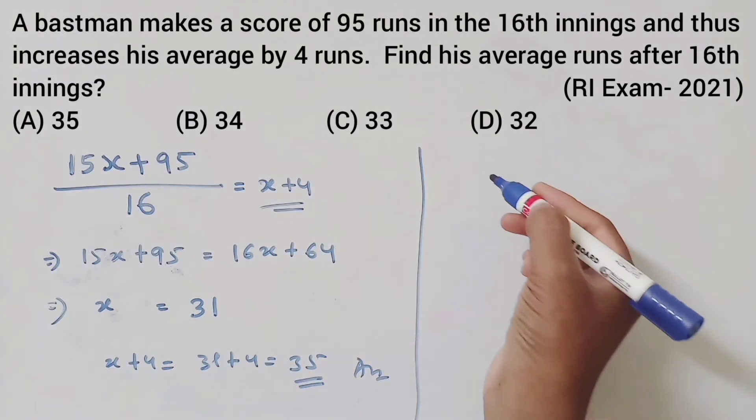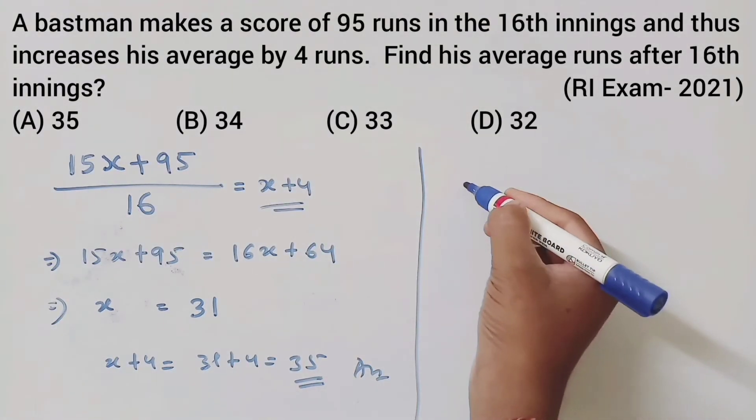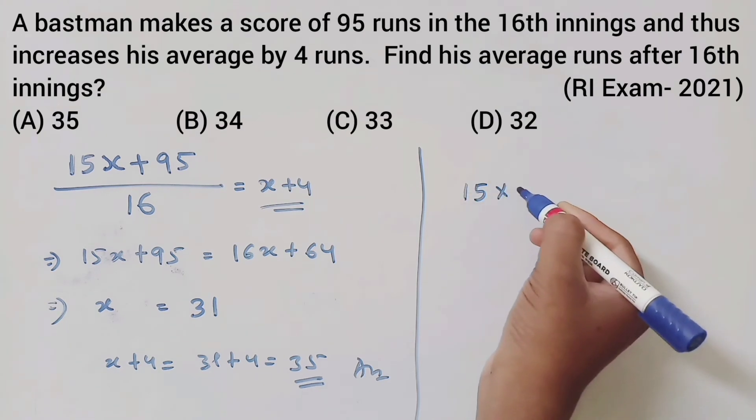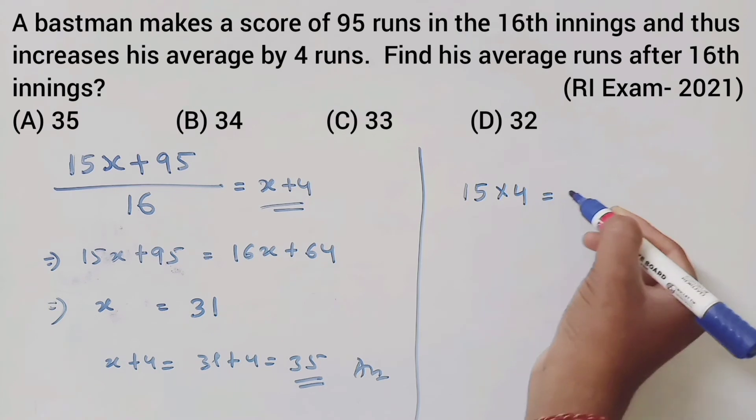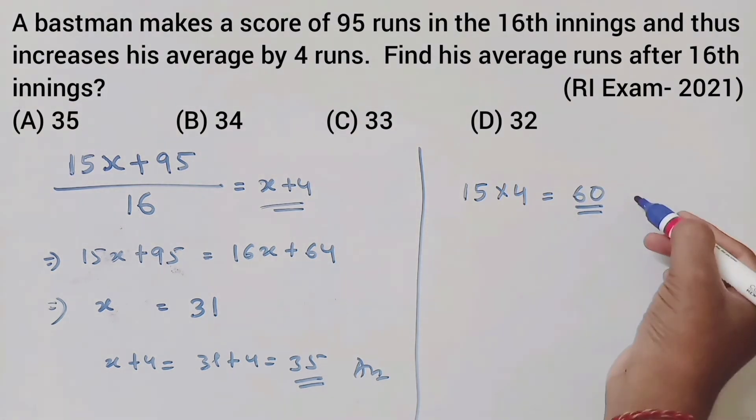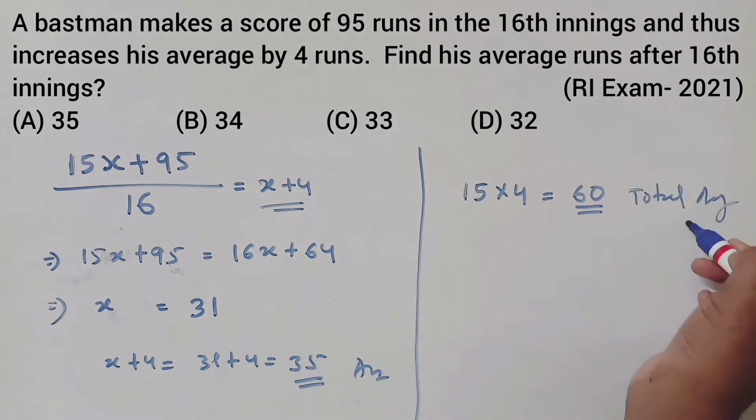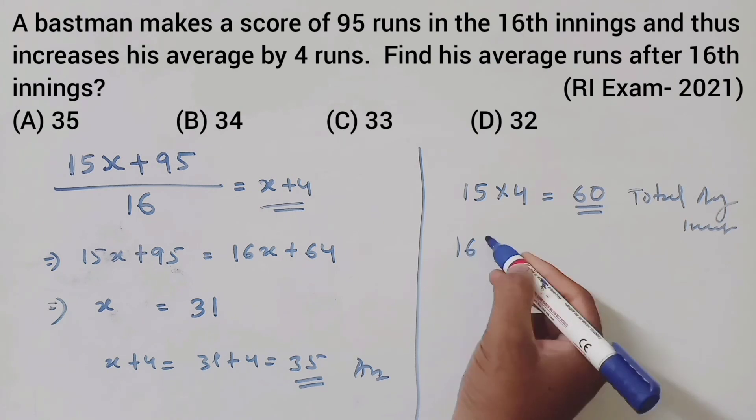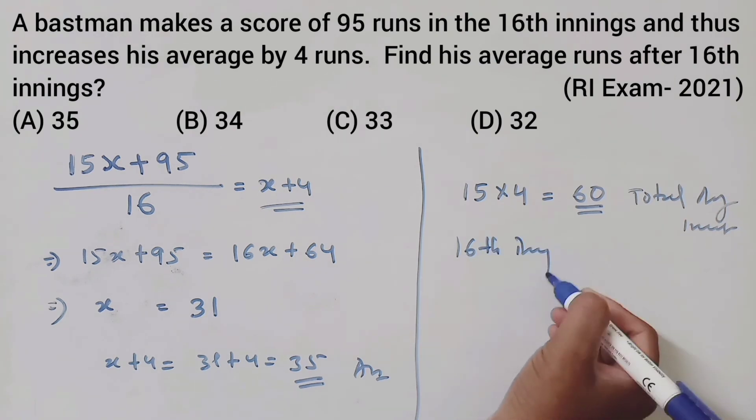15 into 4 - this is the total average increase - this equals 60. The 16th innings score is 95.